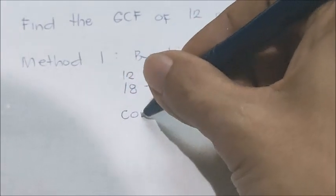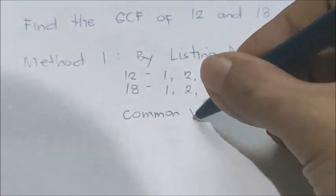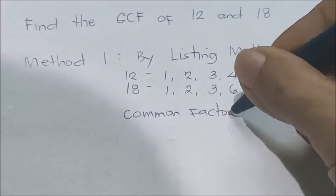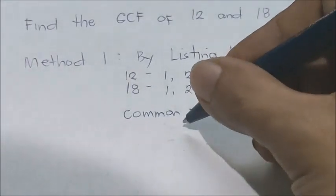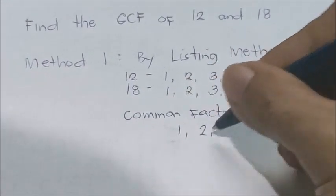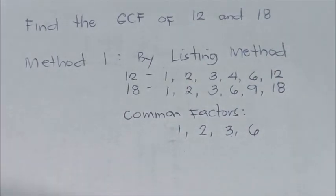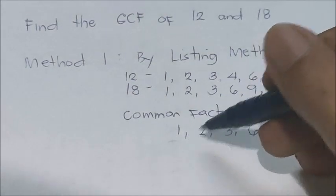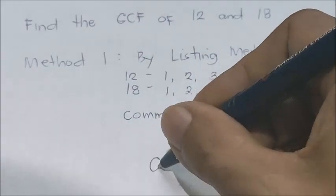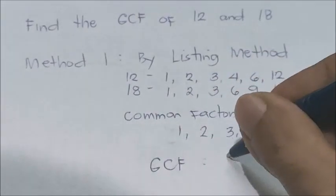Now we find the common factors between them. The common factors are 1, 2, 3, and 6. Now, what we're looking for is the GCF, the greatest common factor, which is 6. So, the GCF is 6.